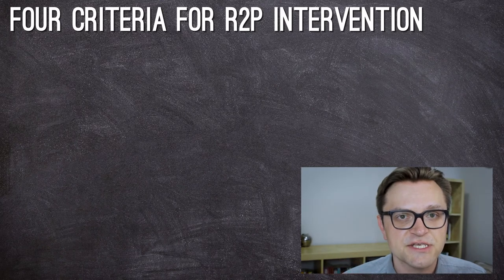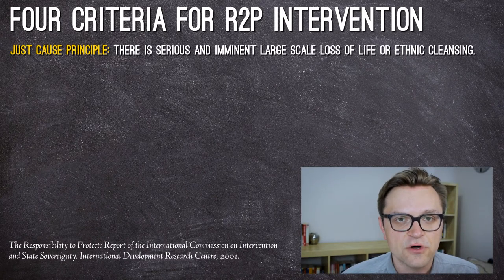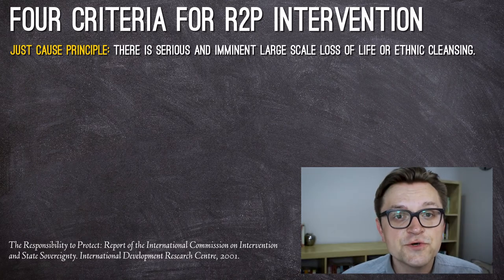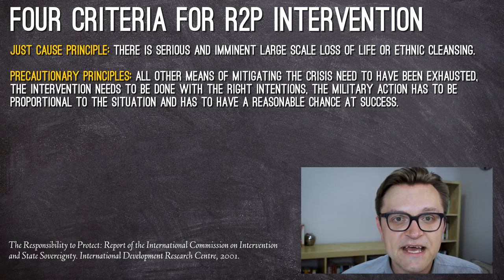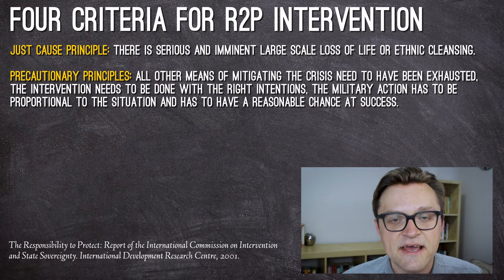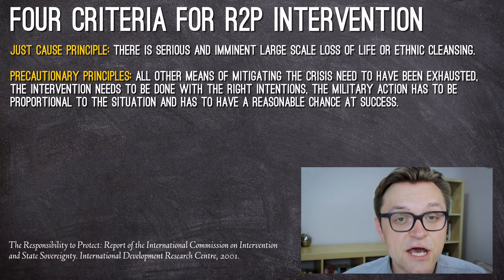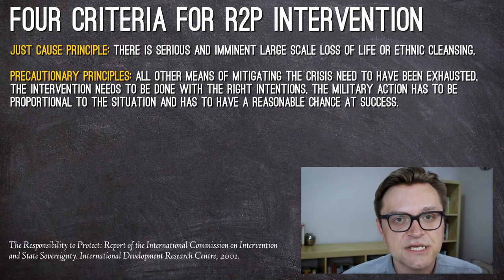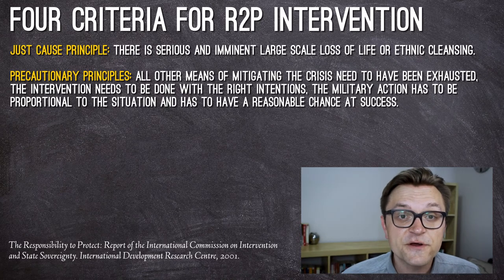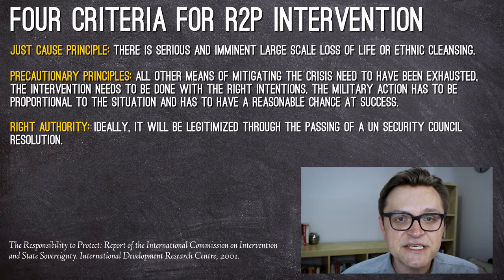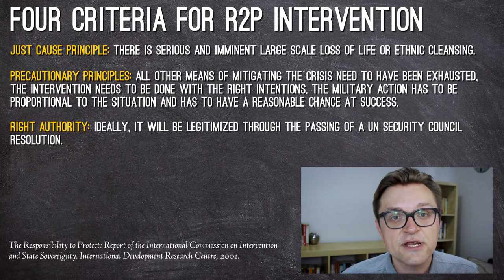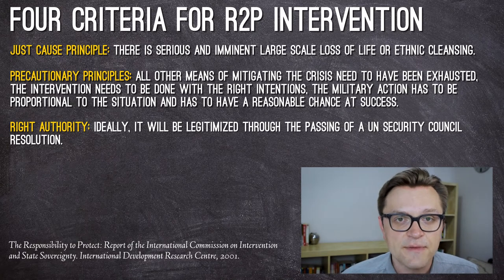According to the R2P principle, four criteria need to be met to justify intervention. Number one is the just cause threshold: there needs to be an imminent major loss of life or ethnic cleansing. Number two are the precautionary principles — this idea that all other means of bringing the crisis to an end have been exhausted, that the intervention needs to be done with the right intentions, and that the military action has to be proportional to the situation and needs a reasonable chance of success. The third criteria is that the intervention needs the right authority, which in principle means there should be a UN Security Council resolution to authorize the military action.